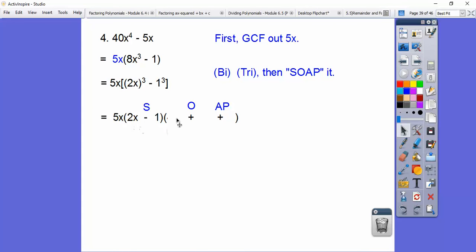2x² is 4x². 1² is 1. That's what goes on the bookends. And then multiply. 2x times 1 is 2x. That's what goes right there in the middle.